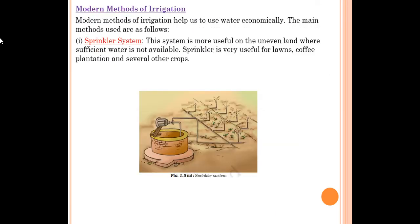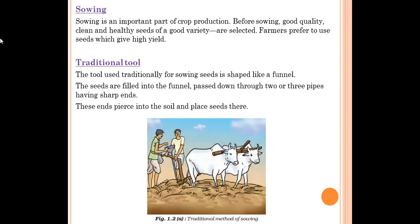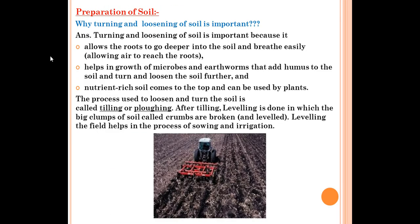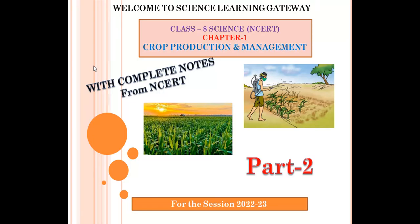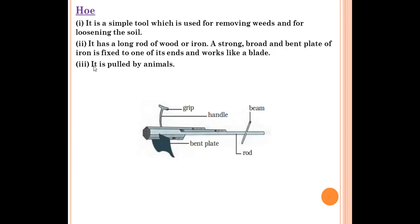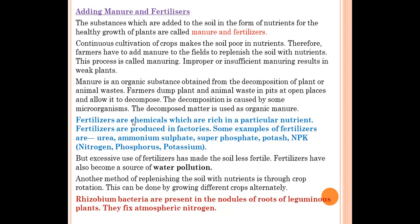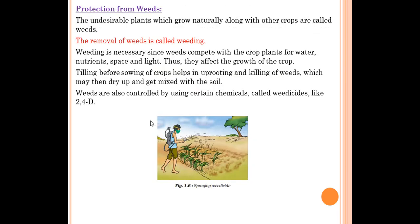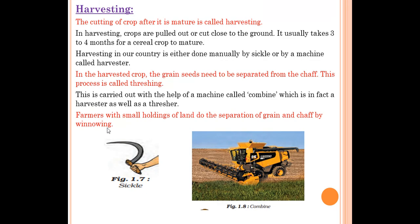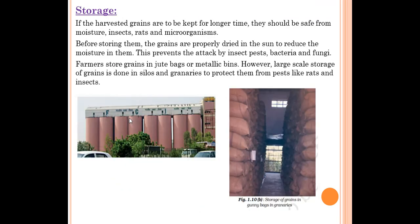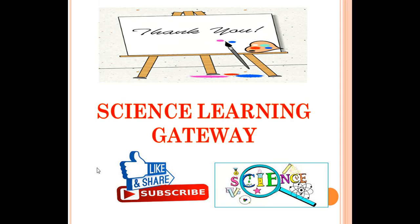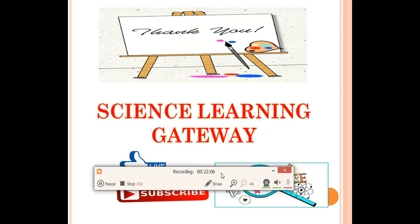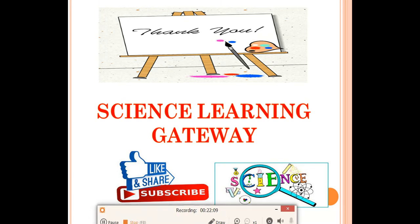That's all for this lesson. I hope what we read in Chapter 1, Crop Production and Management, is clear to you. I will also discuss the question answers of this lesson in the next part of the video. If you haven't watched Part 1, I will provide the link in the description box. You can also connect with me through my Facebook page. If you are new to my channel, do subscribe and click the bell icon for notifications. If this tutorial was helpful, please click the like button. Thank you for watching Science Learning Gateway. Do study properly, read the textbook once, and make your notes — it will be helpful during exams.